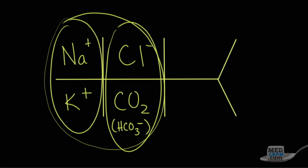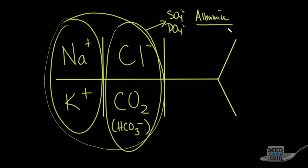You can probably think of some negative charges that aren't here. We can think of sulfates — those are negative charges. We can think of phosphates — those are negative charges. There are also proteins that are negatively charged, like albumin. What about other negatively charged things like lactate? Lactic acid breaks off and forms lactate, and that's a negative charge not here in the CHEM7.